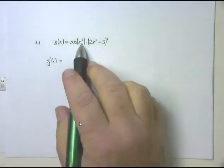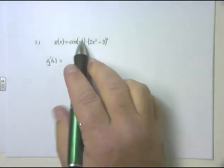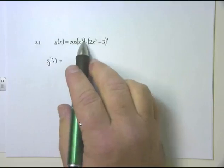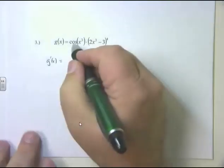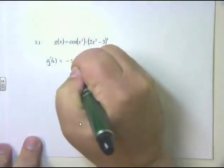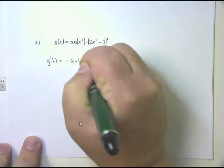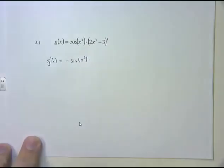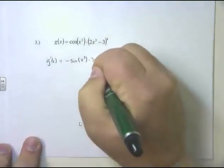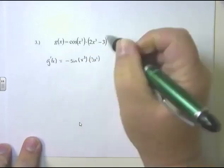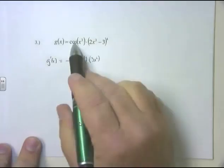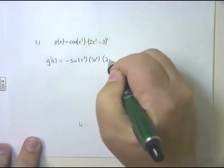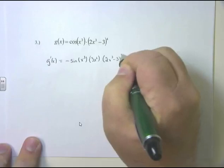Let's look at the derivative of the first: cos(x³). Cosine is on the outside; x³ is the angle on the inside — that's a chain rule problem. Derivative of the outside: derivative of cosine is negative sine. The inside, x³, stays the same. Times the derivative of the inside, which is 3x². So negative sine(x³) times 3x² is the derivative of the first. But remember, this is a product rule, so it's derivative of the first times the second, (2x³ - 3)⁴.